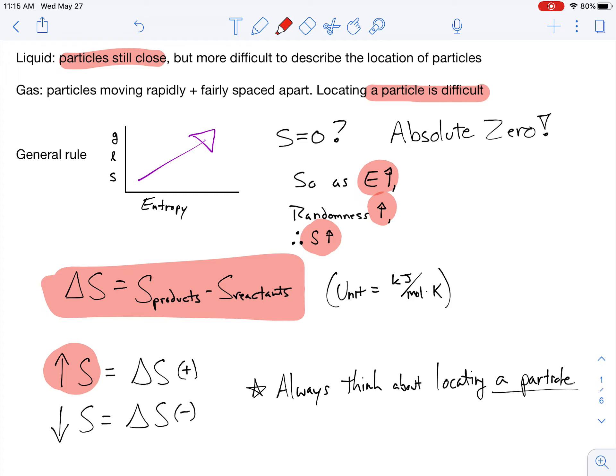In chemistry, when entropy increases, we give it a positive value. And when entropy decreases, we give it a negative value. And remember, the big thing about entropy is always about locating a particle. If it's becoming more difficult to locate a particle, it's positive. If it's less difficult to locate a particle, it's negative.